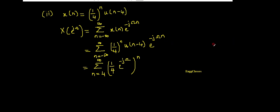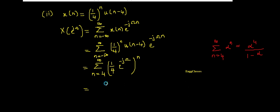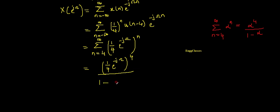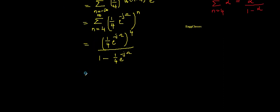The answer depends on the result of the geometric series. The geometric series summation from n = 4 to ∞ of α^n equals α^4 divided by (1 - α). Making use of that, in place of α I have (1/4 * e^{-jω}), so the result is (1/4 * e^{-jω})^4 divided by (1 - (1/4) * e^{-jω}).